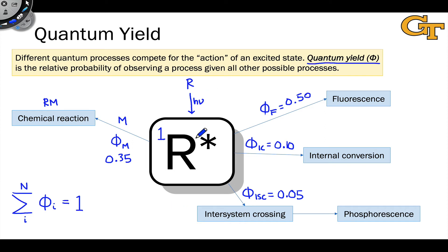Now, what does each of these numbers mean? Well, essentially, the quantum yield means for every one molecule of R star generated or for every one photon absorbed, this is another definition you'll see, 0.35 of those go on to productive reaction to form RM.